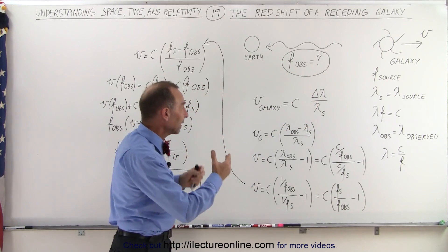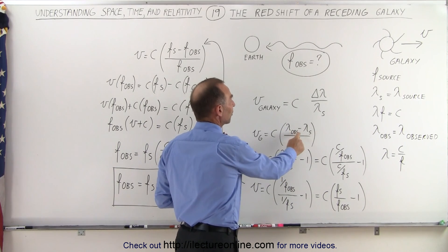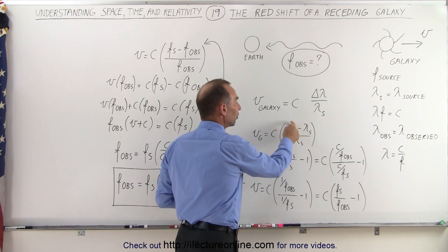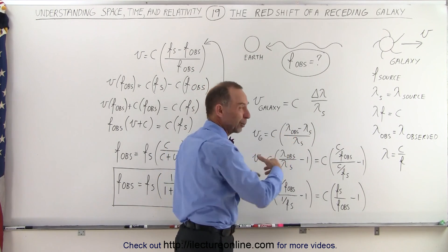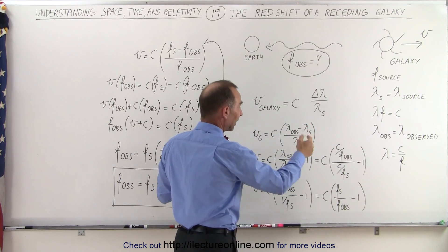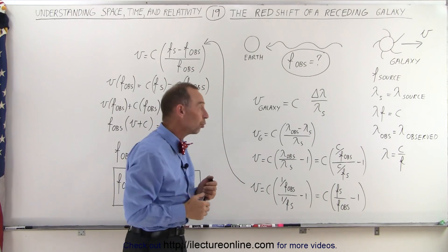And then if we turn that into this equation right here, notice that now we have the wavelength of the observed frequency minus the wavelength of the source, because this is now going to be a bigger number. We want this to be positive, so the wavelength is going to stretch, and because of that, the observed wavelength is going to be larger than the wavelength of the original source.